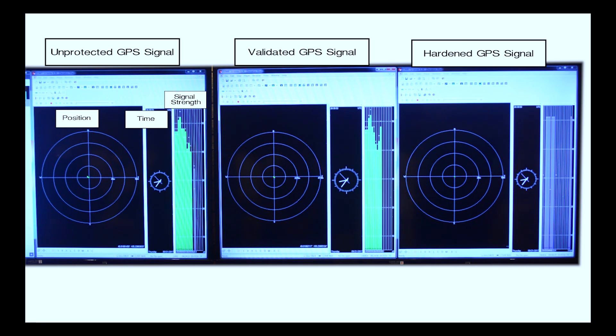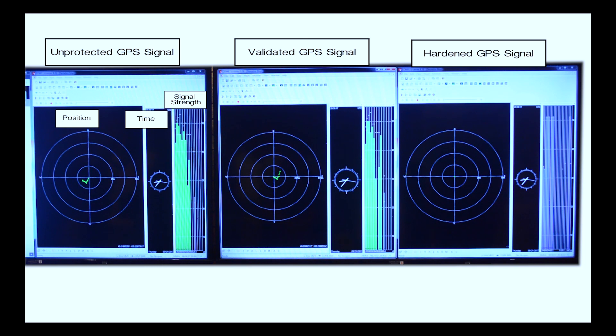You're starting to see the position movement occur, both in the unprotected as well as the validated screens. Of course, the position movement in the hardened is showing nothing. It's rock solid. The position continues to move on and on. And in the case of the validated output, the anomaly was detected, and you can see the signal was cut off. That's why you see the satellite signal strength drop down low.